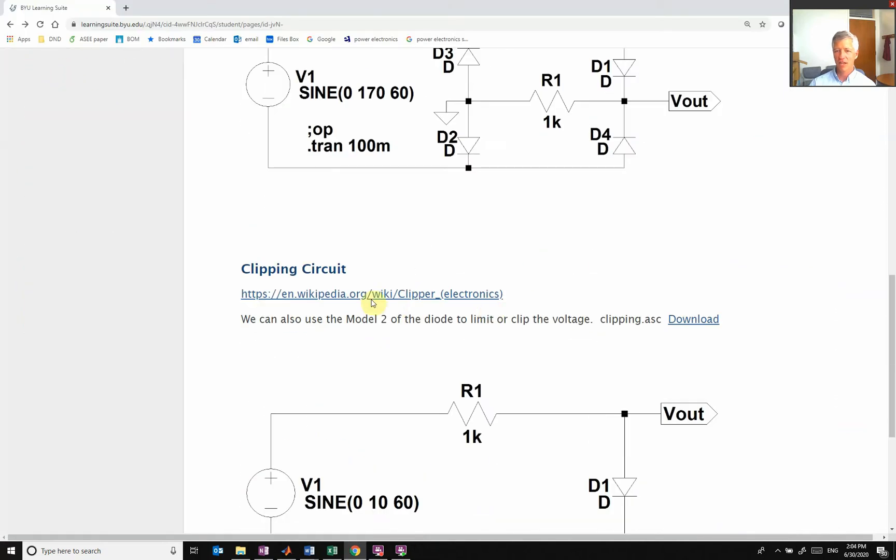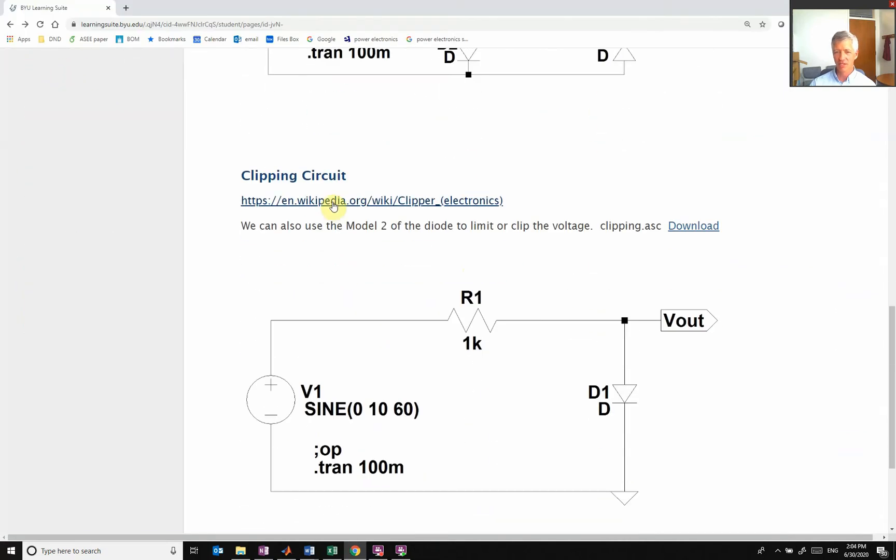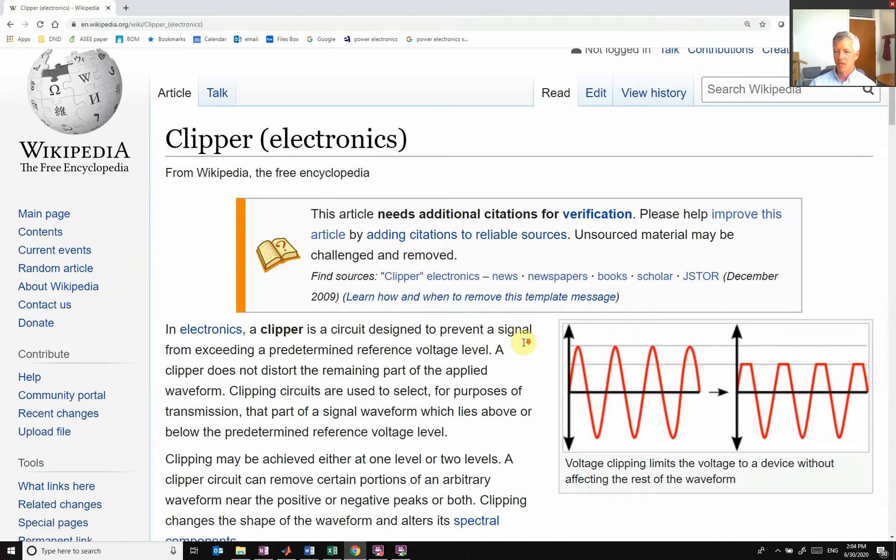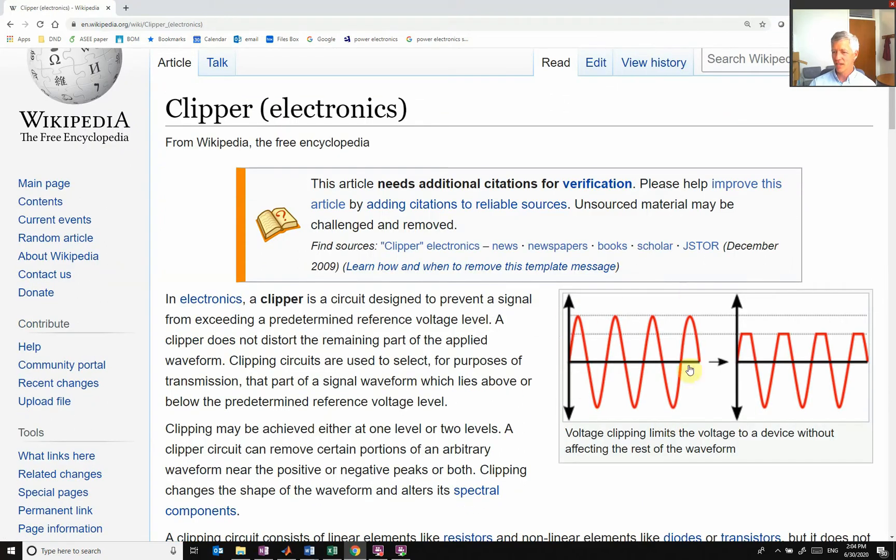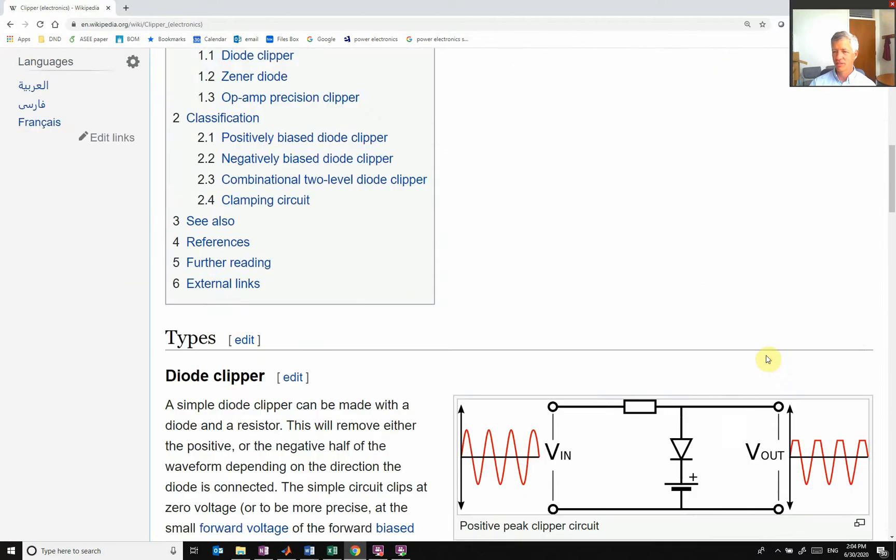Now we go down. The other most common one is called a clipping circuit. So in a clipping circuit, you see you have this sinusoidal voltage, but I don't want it to go above this value. So I want to clip it off and make sure it doesn't go above that value.